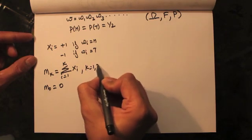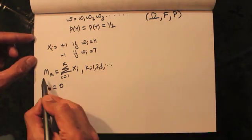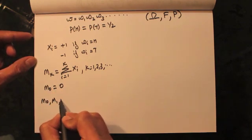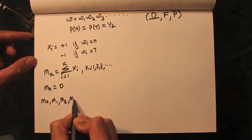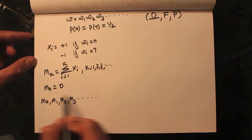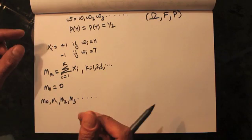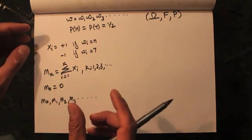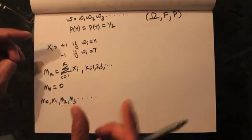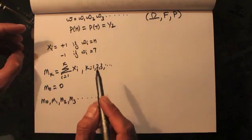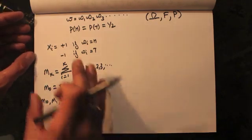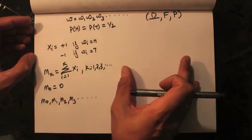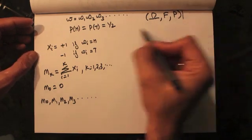For k equals 1, 2, 3, and so on, the series m0, m1, m2, m3 was called a random walk. In the previous lecture we talked about various properties of the random walk and the properties of their increments. Now what I would like to do, following a similar approach, is talk about scaled symmetric random walks.